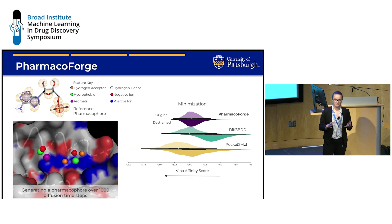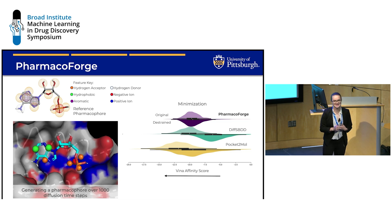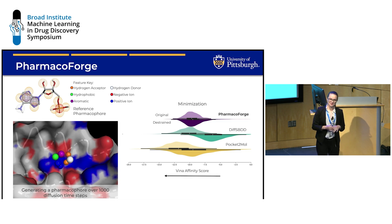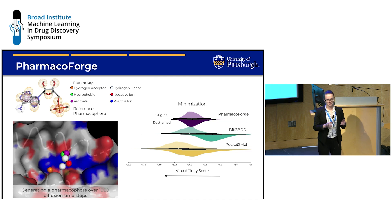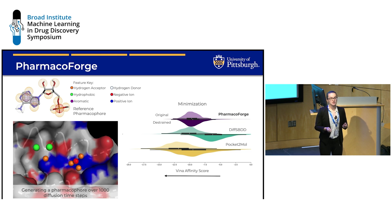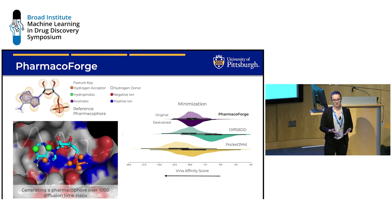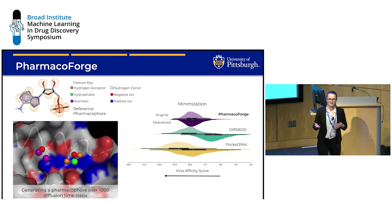We generated 30-plus pharmacophores for the DUDE dataset, which consists of 102 protein targets, then screened the CHEMBL database and compared results to de novo-generated ligands for all DUDE targets. Our initial results are shown in the top half of the violin plot in lighter color, showing the minimization — the local optimal pose for the ligand in the pocket. We perform about the same as Diff-SBDD, while PocketMol outperforms both methods. We're still happy with this result because it shows our pharmacophores can find ligands that bind with high predicted affinity, comparable to ligands generated specifically for the pocket.